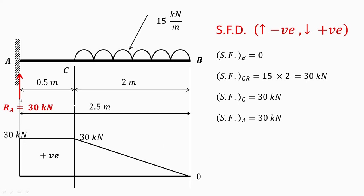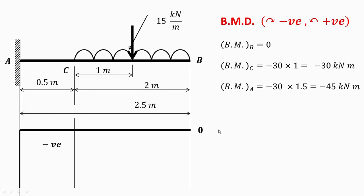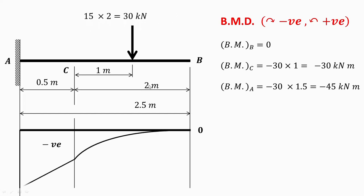The direction of the reaction is reversed — all applied forces are in the downward direction and this reaction is in the upward direction. For the bending moment diagram, we convert the UDL into a point load: 15 kilonewton per meter over 2 meters gives 30 kilonewton, acting at the center of the 2 meter length, that is 1 meter from B. The conventions used for the bending moment diagram are clockwise negative and anti-clockwise positive.